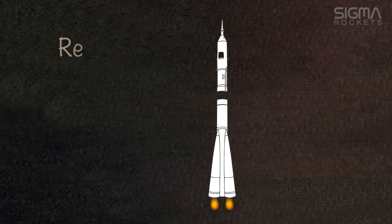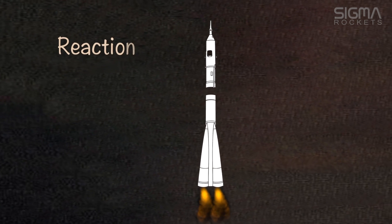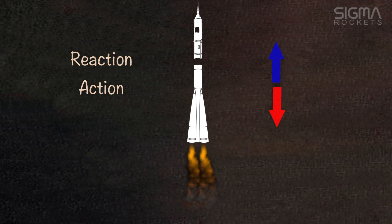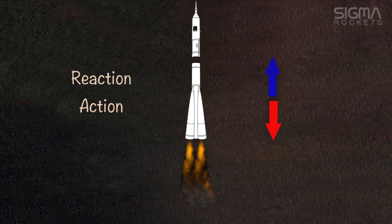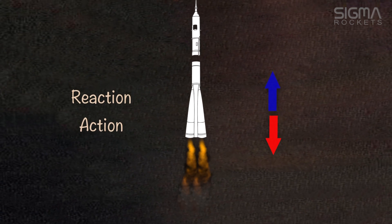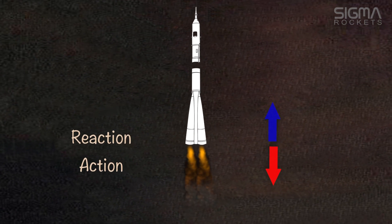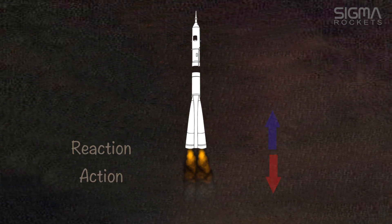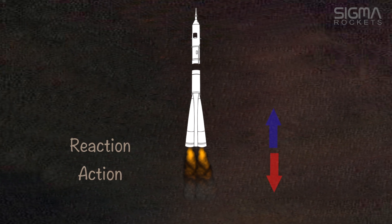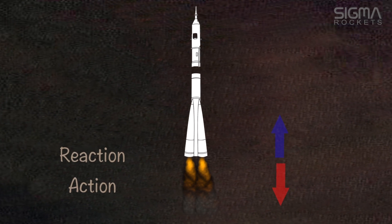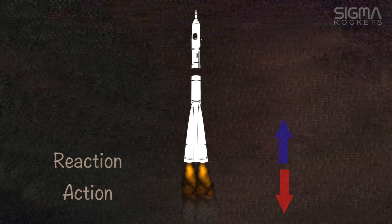For rocket flight, thrust is an example of the third law. The acceleration of the pressurized gases through the rocket engine nozzle creates an action; the reaction is the thrusting force created on the engine mount.